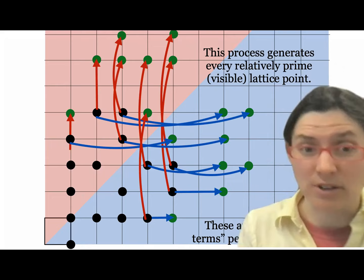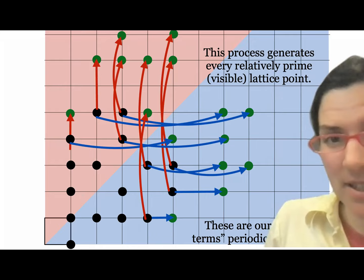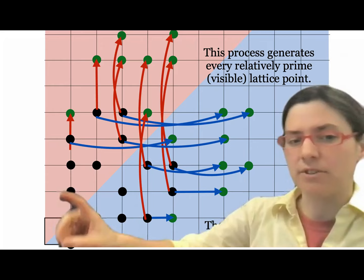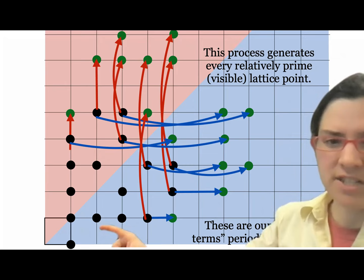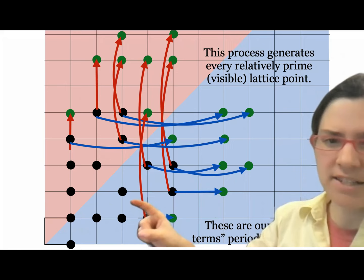If we kept going we'd generate every relatively prime lattice point — the 'visible' points. If you sat at the origin in an orchard with a tree at every lattice point, these are the ones you'd be able to see. For example, we have (2,1) but not (4,2) because it's blocked from the origin and doesn't have GCD of one.